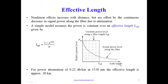On the graph, the x-axis shows link length and the y-axis shows power. Power decreases exponentially with link length as shown by the curve. For simplicity, we assume a model where power is constant up to a link length L_eff, such that the shaded rectangular area equals the area under the exponential power distribution curve. The effective length L_eff is therefore less than or equal to the actual fiber length. For a power attenuation of 0.22 dB/km at 1550 nm, the effective length is approximately 20 km — meaning up to 20 km, power is approximately constant with minimal effect from non-linearities.